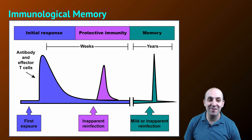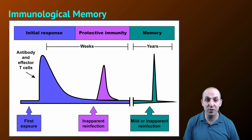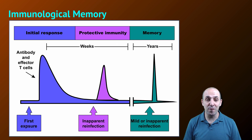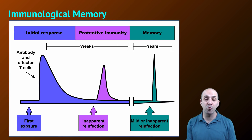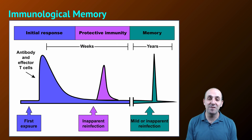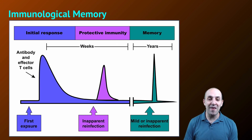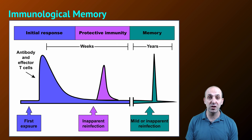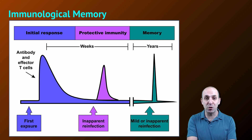After the production of B cells and T cells specific to a particular pathogen, and the initial immune response eliminating that pathogen from the body, a subpopulation of those B cells and T cells will remain alive and active in our bodies for the rest of our lives. This means that subsequent reinfection by that pathogen is handled much more rapidly, as our immune system no longer has to undergo clonal selection to generate effective lymphocytes against that pathogen.